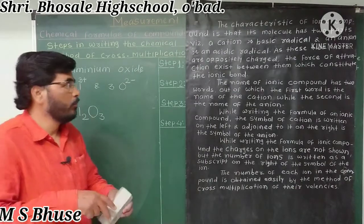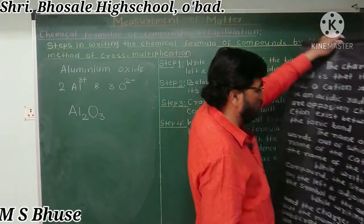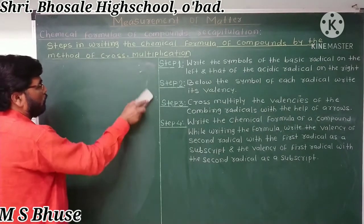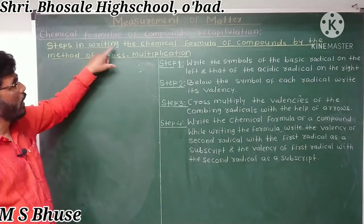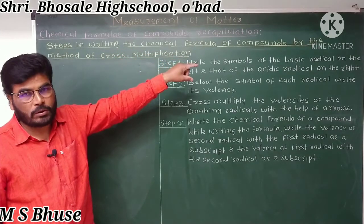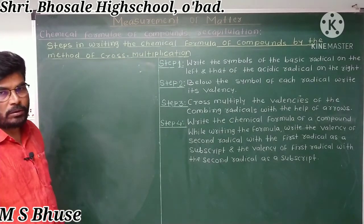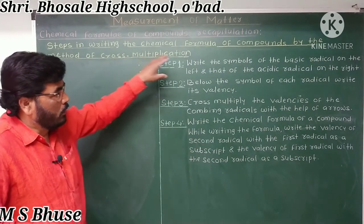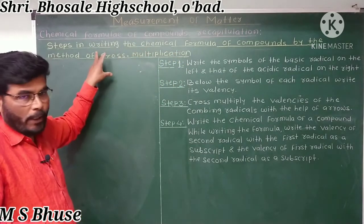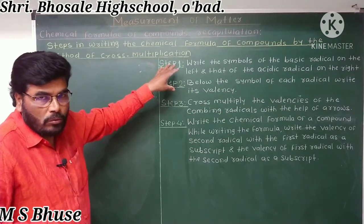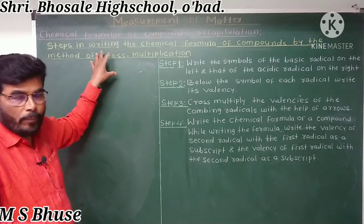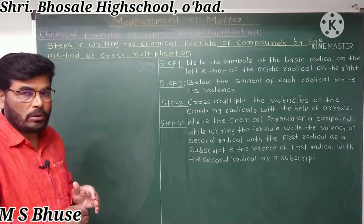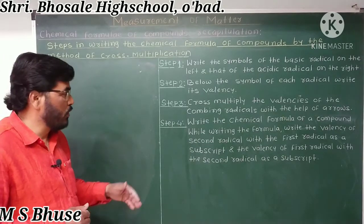The next point is: steps in writing the chemical formula of compounds by the method of cross-multiplication. We will see these steps for writing the formula of ionic compounds using the cross-multiplication method.